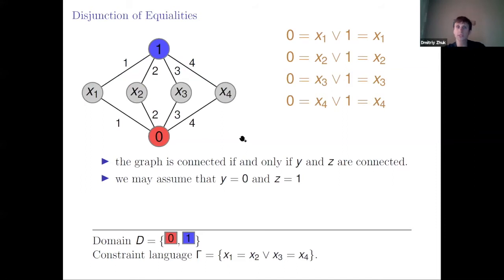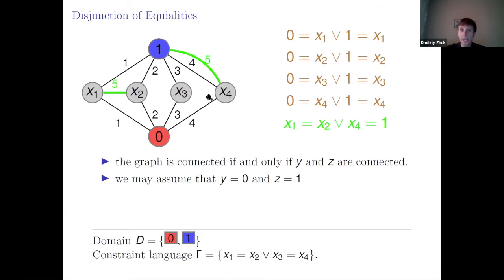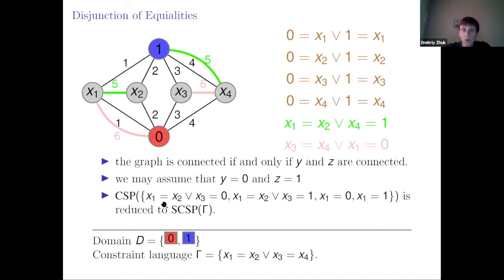We may assume Y=0 and Z=1 in any surjective solution. Then we can add pairs of edges corresponding to constraints like X₁=X₂ or X₄=1, and X₃=X₄ or X₁=0. I am claiming that CSP over this constraint language can be reduced to our surjective CSP. The first two constraints follow from the construction above, and the last two are just constant relations — X=0 or X=1 — obtained by identifying Xi with Y or Z.